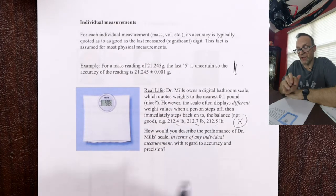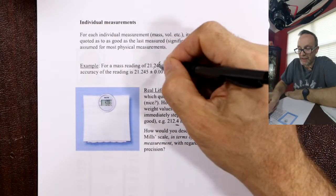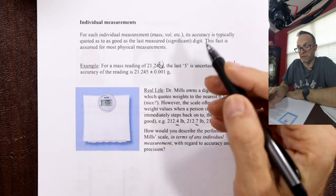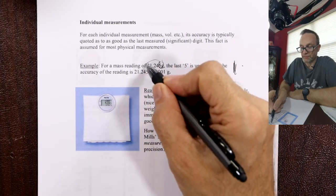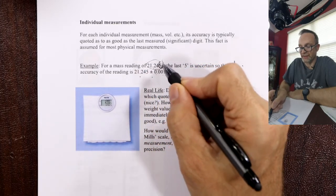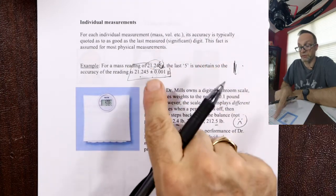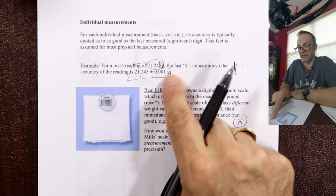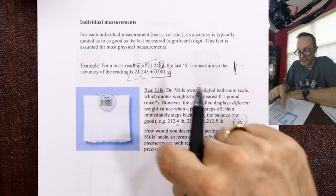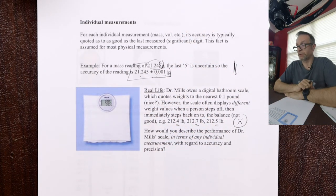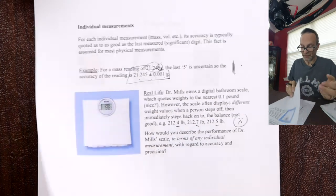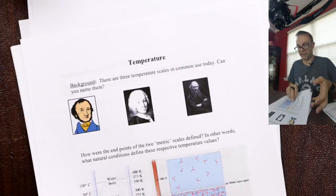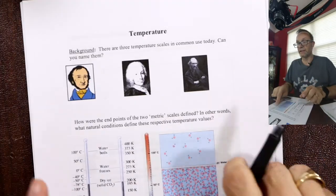When you record something one time — say you put something on the balance in the lab — that last digit is said to be uncertain. It might be a 5, a 6, or a 4. We quote the answer as the value from the balance plus or minus the error in that last digit. For a group of measurements, it's mean and standard deviation. The last video in this sequence will be temperature and density.